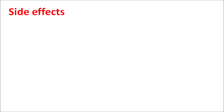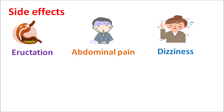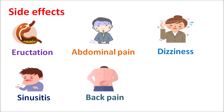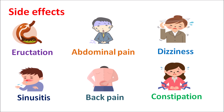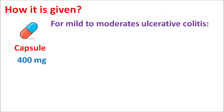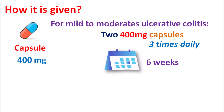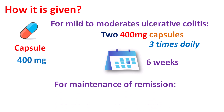Important side effects of mesalamine include gastrointestinal effects such as eructation (belching), abdominal pain, dizziness, sinusitis, back pain, constipation, and sometimes bloody diarrhea due to intolerance. This drug is available as a delayed-release capsule at a strength of 400 mg. For treatment of mild to moderate ulcerative colitis, it is given as two 400 mg capsules three times daily — so 800 mg per administration — for up to six weeks. For management of remission of ulcerative colitis, the dose is 1600 mg per day given in divided doses.